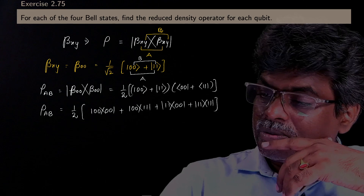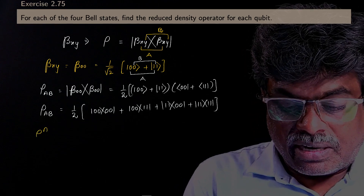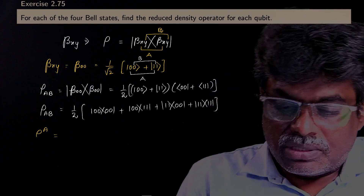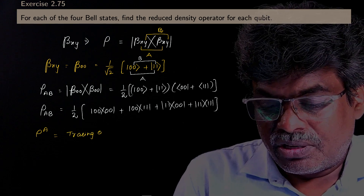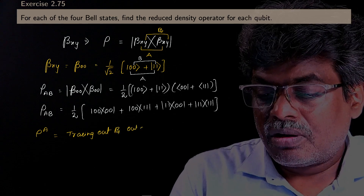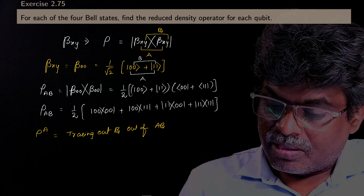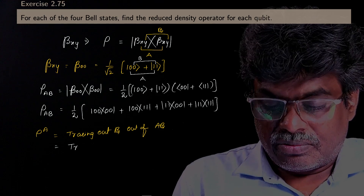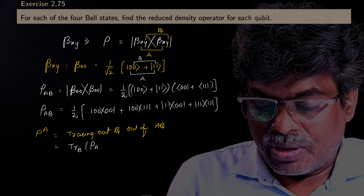Now, I would like to find the density operator corresponding to A — that means corresponding to one qubit — which is nothing but tracing out system B from ρ_AB.